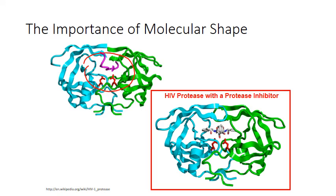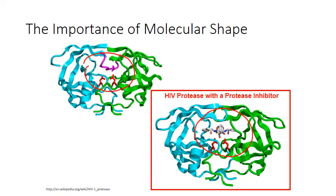There are a variety of protease inhibitors that have been developed, but all of them have been based on the same concepts — they are designed so that their three-dimensional structure blocks that active site. To do this, the scientists responsible for drug development utilize their understanding of the way molecules arrange themselves three-dimensionally. One of the fundamental theories underlying this process is VSEPR theory.